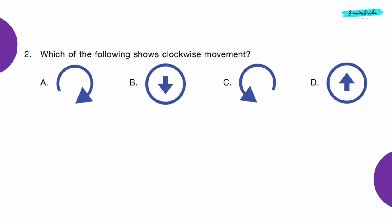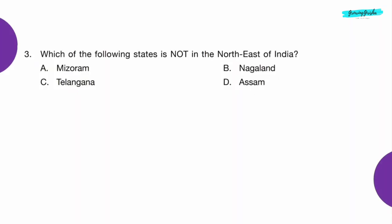Question 2: Which of the following shows clockwise movement? Option A. Question 3: Which of the following states is not in the northeast of India? Option C.